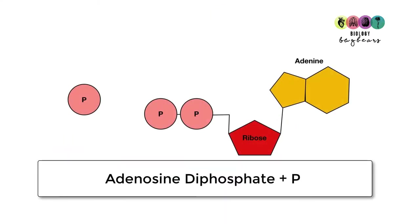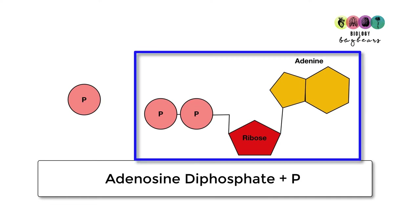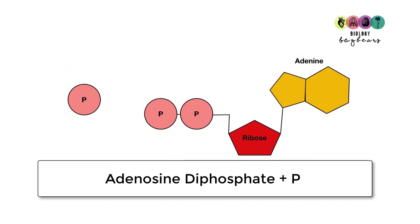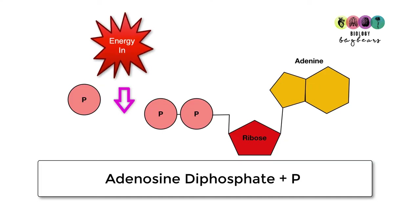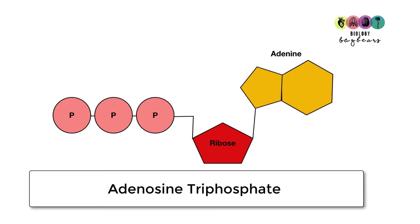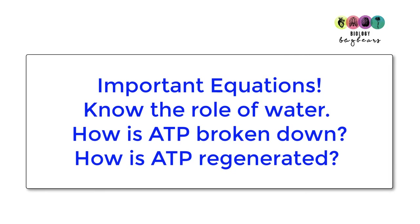When ATP is broken down and energy is released, we're left with adenosine diphosphate (ADP) and an inorganic phosphate group. To regenerate ATP, we take ADP and that phosphate, input energy, and produce adenosine triphosphate. It's really important that you can write the proper equations for both processes.